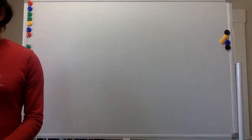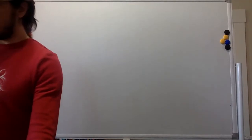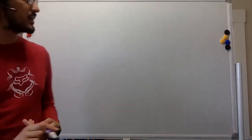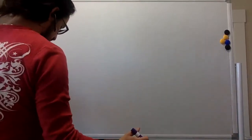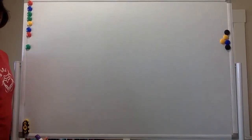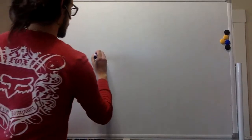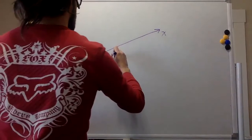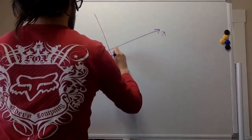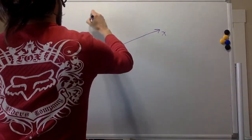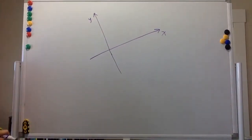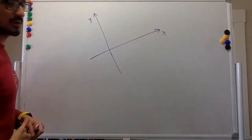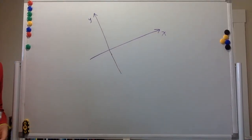Hello. So in this problem, we are given a free body diagram. The free body diagram is rotated from what you will traditionally expect. So you have the x-axis over here and the y-axis over here is rotated from being completely horizontal.